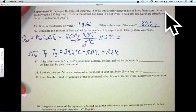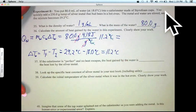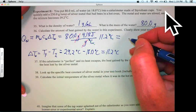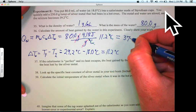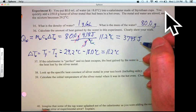Grams cancels grams and degrees C cancels degrees C. We're left with joules, which is what we want. We're calculating Q. And we do the math, and we get about 3745 joules. Okay.